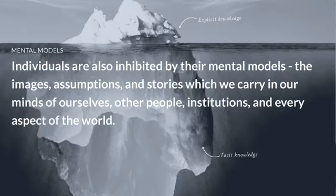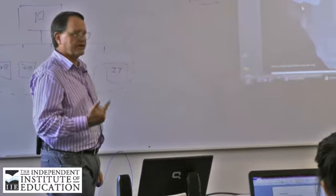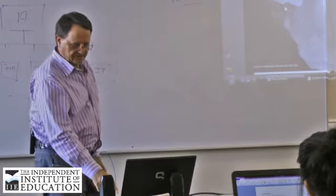Individuals are also inhibited by their mental models in the images, assumptions, and stories in which we carry our minds of ourselves and other people, institutions, and every aspect of the world. If I look at that, I would say what is known to us is obviously the top part that we know. And we don't know this part down here, and what the effect can be. And we have to start thinking about that. We have to start thinking about that, on what the effects are on our organizations. Broadly, we have to think broader, and I think this is the point they're trying to make here.